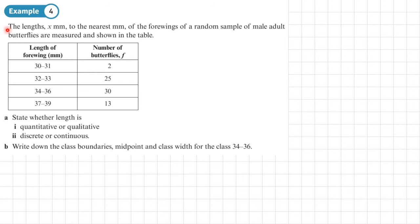Example 4. The length x to the nearest millimeter of the forewings of a random sample of male adult butterflies are measured and shown in the table. So here's the table here. Part A, state whether the length is quantitative or qualitative. So first of all, the length is a numerical value here. So it's quantitative.